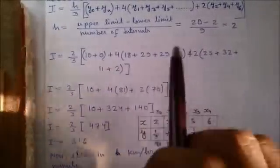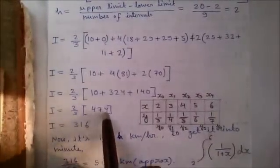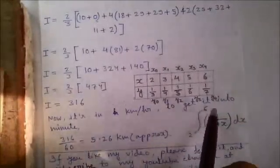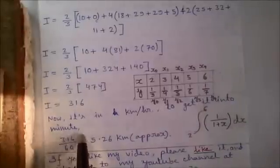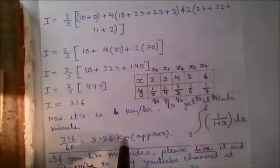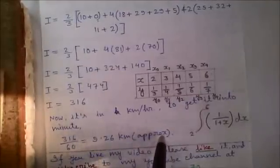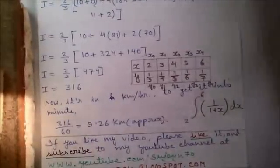Rest is simple calculation. You will get I equals to 2 by 3 into 474, that is 316. Now it's in kilometer per hour; to get it into minute it divided by 60. So 316 divided by 60 equals to 5.26 kilometers approximately, the distance covered by the car between that time interval. So this was our answer for this type of question.